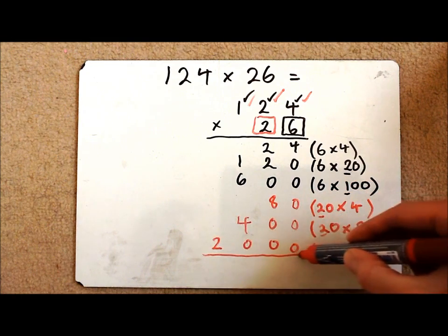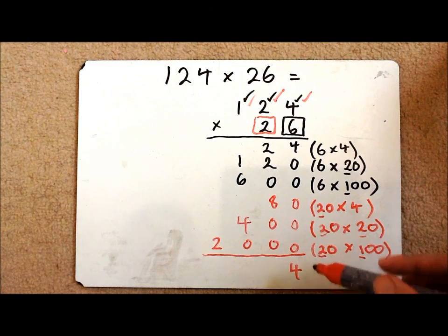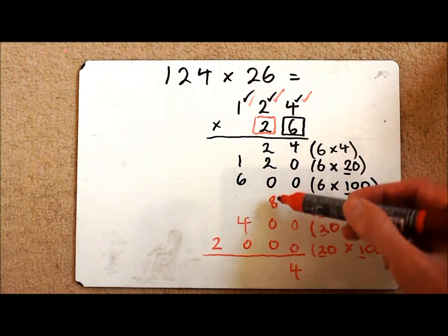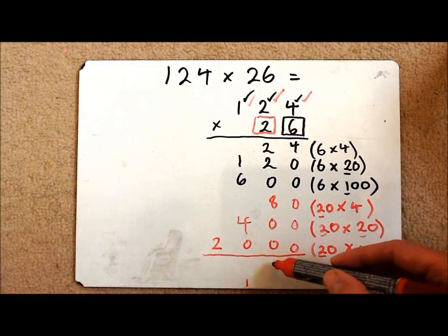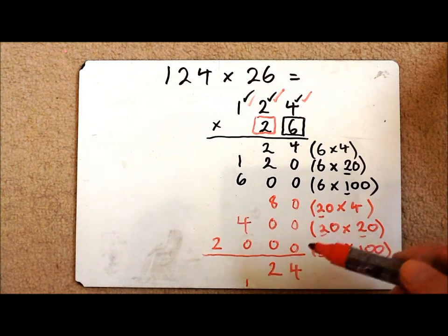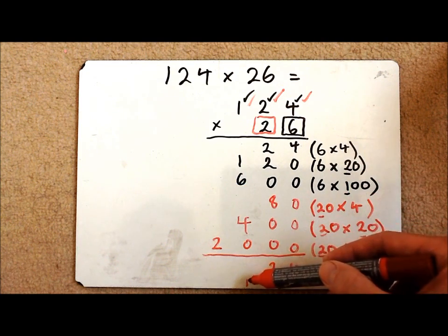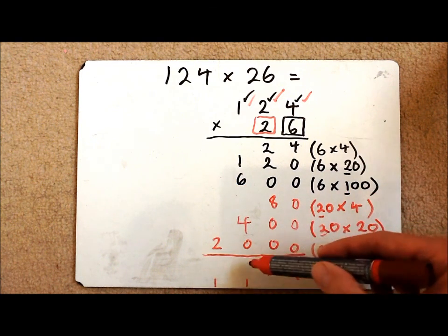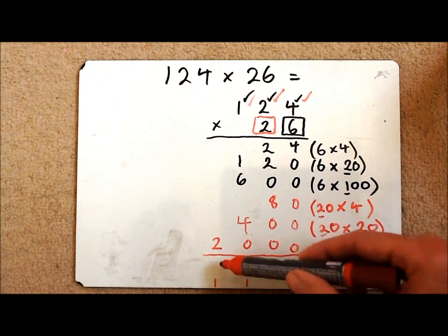All I have to do now is add up my columns. So I've got 4 in the ones column. 2, 4, 8 is 12. So I'm going to have to regroup the 1 over there. I've got 6 and 4 is 10, 11, 12 again. So I'm going to have to regroup into the thousands column. And then finally I've got 2, 3 thousands.